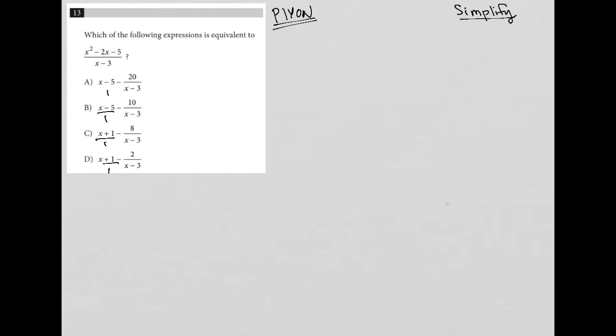But plugging in your own number is one of my favorite strategies because it's very easy to identify when to use it. And that is any time you have variables in the answer choices and in the question, in this case being the term x.